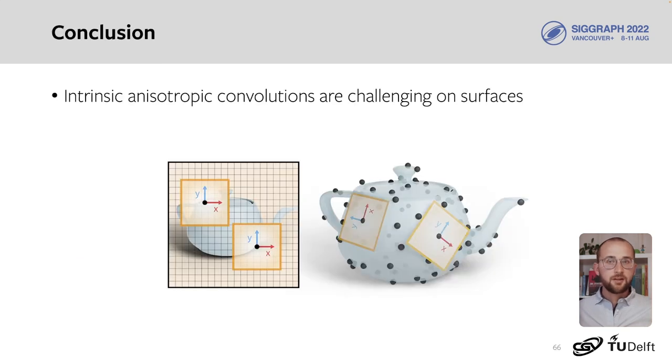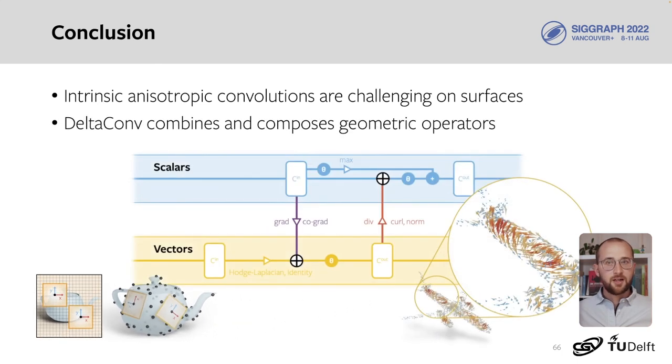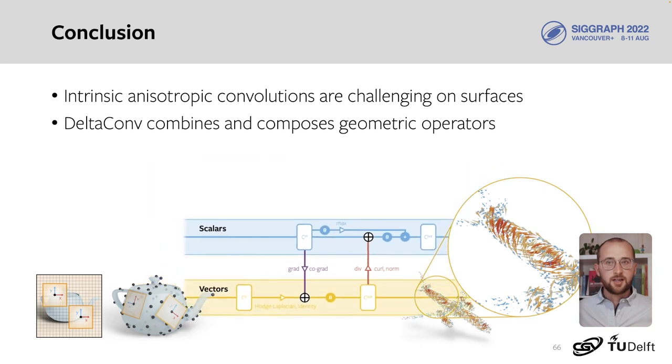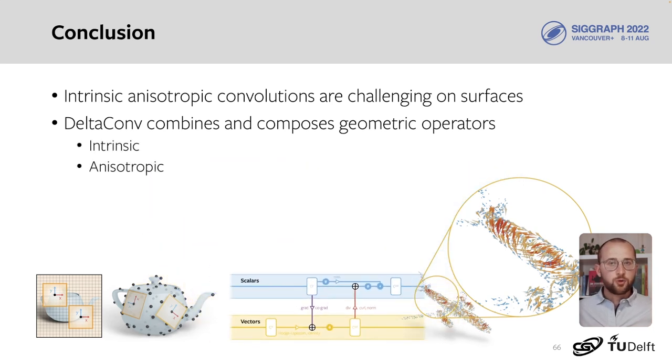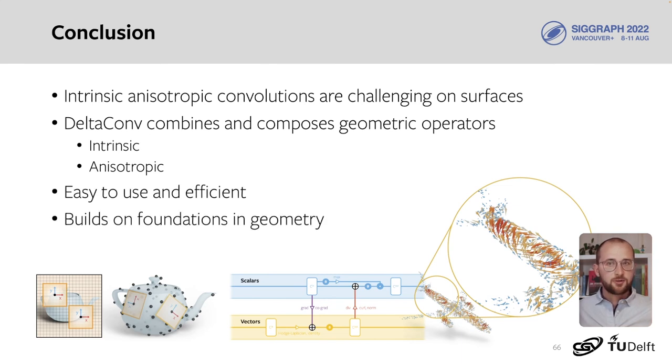Concluding, we saw that it is difficult to design convolutions that are both intrinsic and anisotropic. DeltaConv combines and composes geometric operators, resulting in a convolution that is intrinsic and anisotropic, which gives us improved performance. It is easy to use and efficient, and builds on foundational properties and knowledge from analysis and geometry. And we hope that it inspires more work that connects these fields.